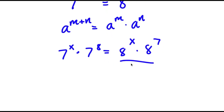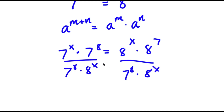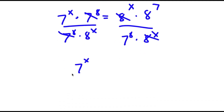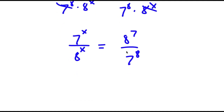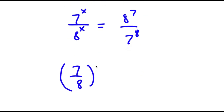Now I'm going to divide both sides by 7 to the power of 8 times 8 to the power of x. These two cancel out and these two cancel out. And I get 7 to the power of x over 8 to the power of x is equal to 8 to the power of 7 over 7 to the power of 8. This is the same thing as 7 over 8 to the power of x is equal to 8 to the power of 7 over 7 to the power of 8.